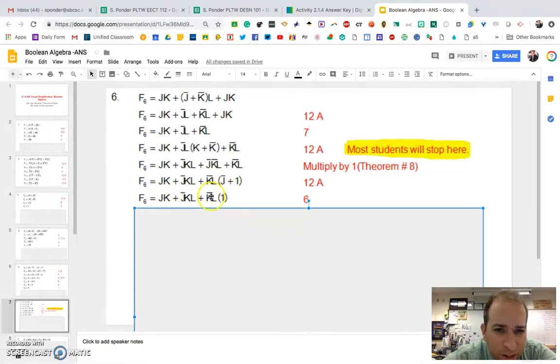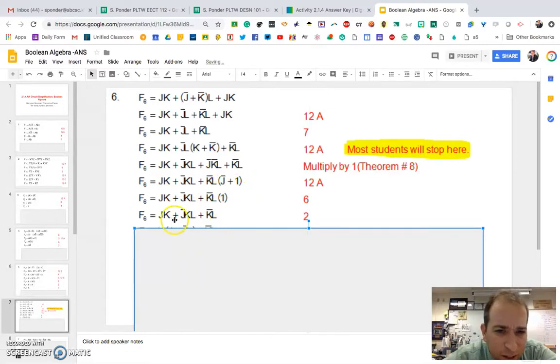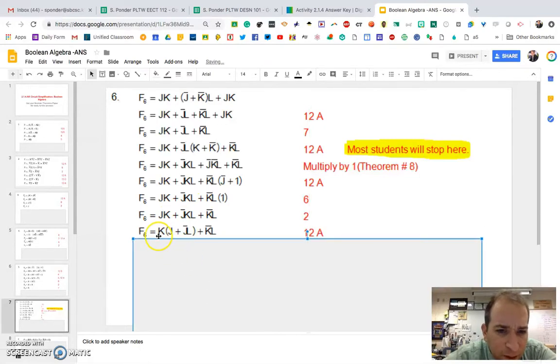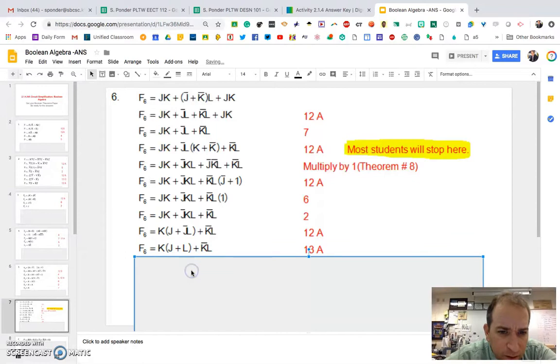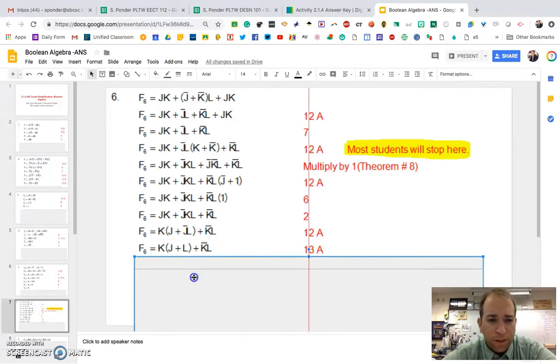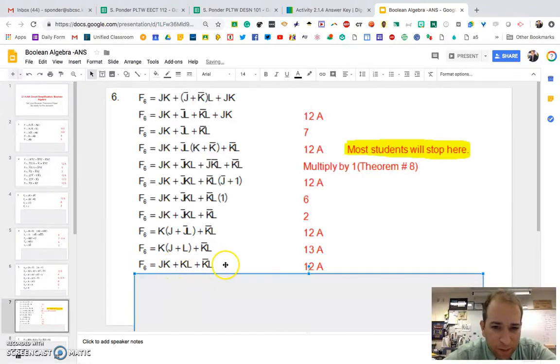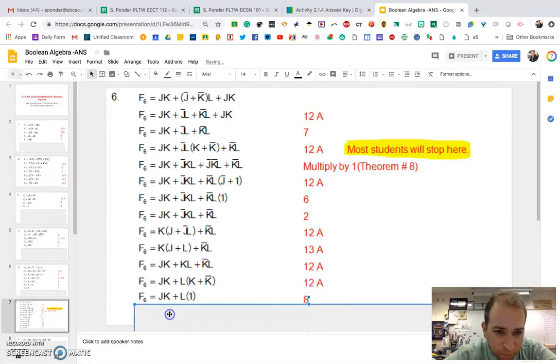And then we have here, we have a not J plus one. That's the same thing, really. Then we'll pull the K out. And when you have a J plus a not J, it kind of simplifies a little bit more. And then we have this. And finally, you pull the K and the not K. So pull the L out, and then you are left with JK plus L.